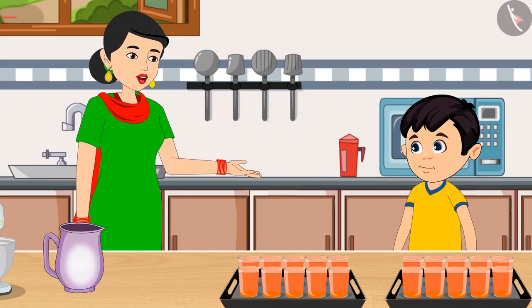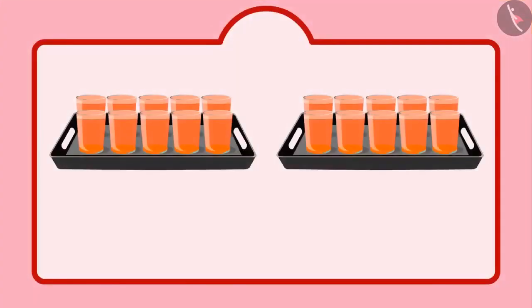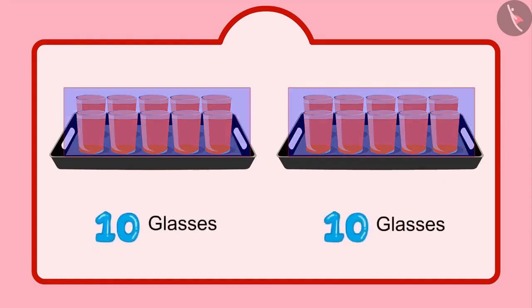You are absolutely right, Chotu. Here you go, your sherbet is ready. Children, can you tell me how many glasses of sherbet Chotu's mother has made? Yes, you are right, children. Chotu has 2 plates of 10 sherbets each. It means 2 tens. This means Chotu has 20 glasses of sherbet.